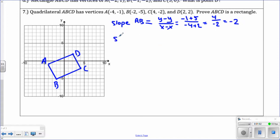I like to do the slope of the opposite side to show that it's the same, just right underneath it. The opposite side of AB is side DC. Let's do DC.